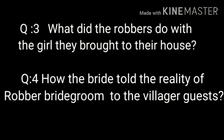The last question, question four, is: how did the bride tell the reality of Robert Bridegroom to the village guests? How she told the reality of the robber bridegroom — when her father, who was actually a miller, invited the whole village as guests to his daughter's wedding ceremony, they all gathered there. They planned to tell stories one by one, and when it was the bride's turn, she told the whole story indirectly.